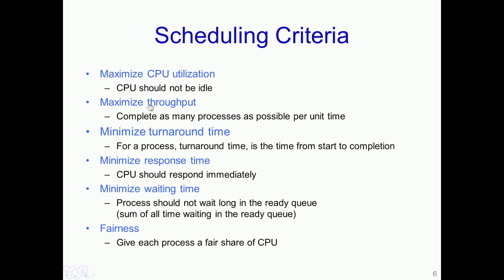A single scheduling algorithm cannot efficiently cater to all these criteria simultaneously, so scheduling algorithms are designed to meet a subset of these criteria. For instance, a real-time operating system would be designed for minimum response time, while CPU utilization and throughput are secondary. On the other hand, a desktop OS like Linux is designed for fairness, so all applications get a fair share of the CPU, with response time being less critical.